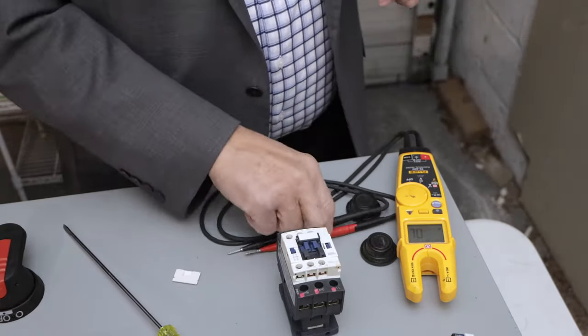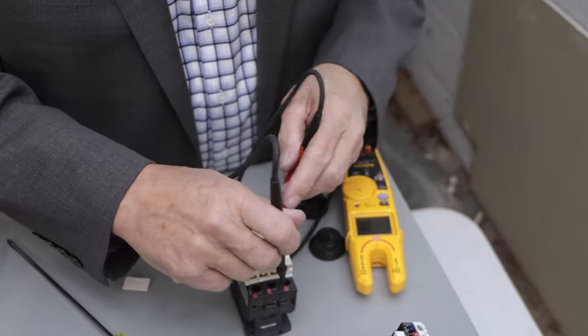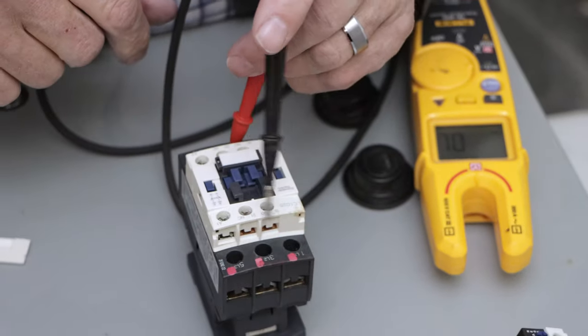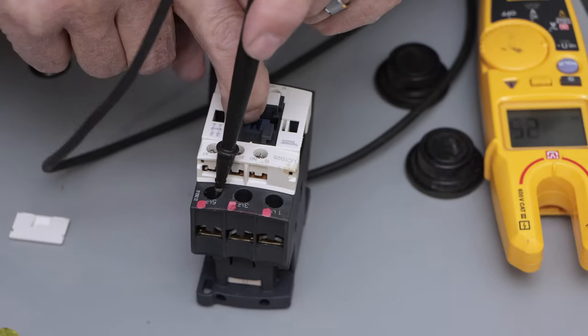Now, with the starter, these are the high power contacts. Here's A phase, B phase, and C phase. Okay, so let's review.